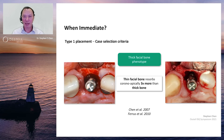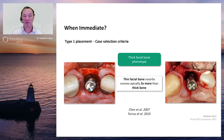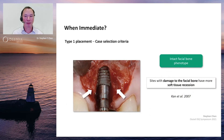The cutoff between thin and thick bone is about one millimeter — one millimeter or more is considered a thick phenotype and anything less is thin. Importantly, the thin facial bone phenotype is the predominant phenotype in the maxillary anterior region, which is why immediate implant placement in the anterior maxilla may not be applicable in the majority of cases.